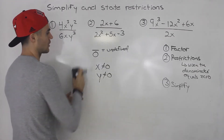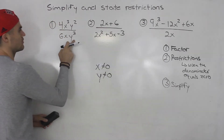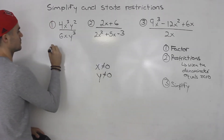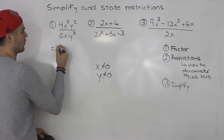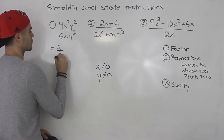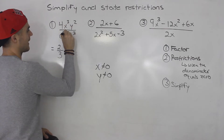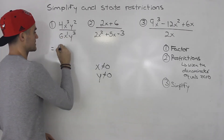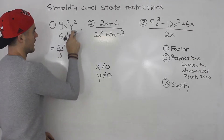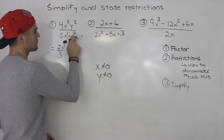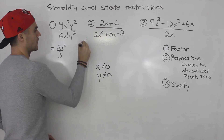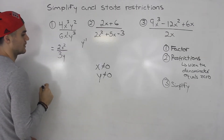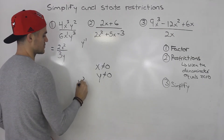So those two are the restrictions for this rational expression. Then we simplify. We can simplify four over six — that is two over three. Then x cubed divided by x is x cubed divided by x to the one; same base, so we subtract the exponents: 3 minus 1 gives us x squared. And over here, y squared divided by y cubed would be y to the negative one, which means a y value in the denominator.